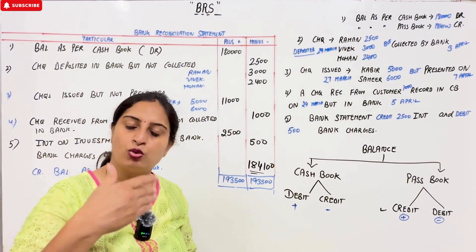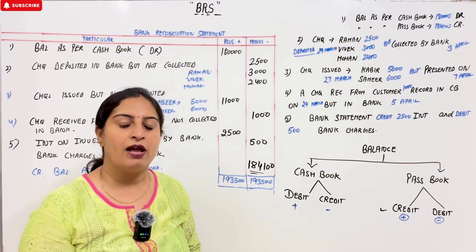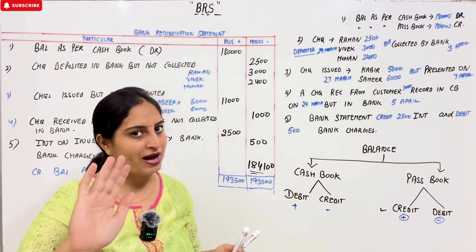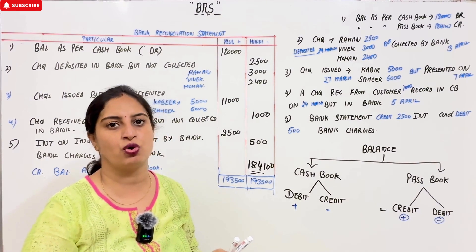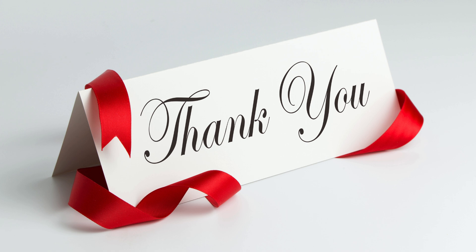It's very easy to do. If you start from the cash book, you check the balance from the pass book side. You can also do it the other way — start from the pass book to check the cash book. Thank you.